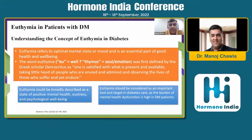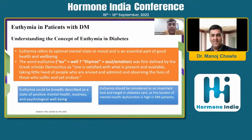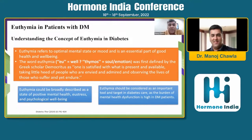What really is euthymia in patients with diabetes? It refers to an optimal mental state or mood and is an essential part of good health and well-being. The word euthymia — 'eu' means well and 'thymos' means emotion or soul. This was first defined by Greek scholar Democritus as one who is satisfied with what is present and available, taking little heed of people who are envied and admired. Euthymia could broadly be described as a state of positive mental health, eustress, and psychological well-being — largely aligning with the WHO definition of health as both mental and physical.